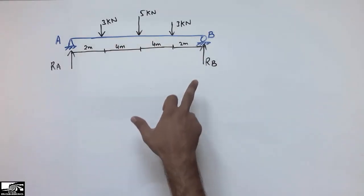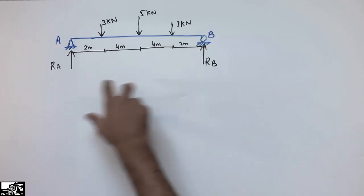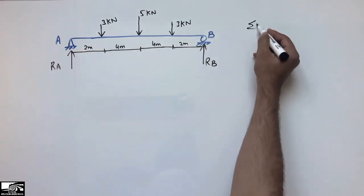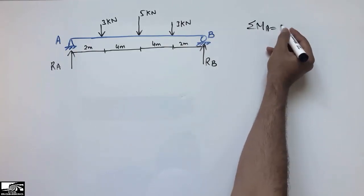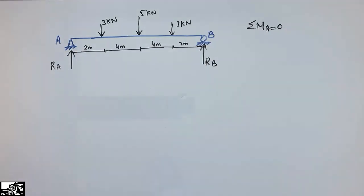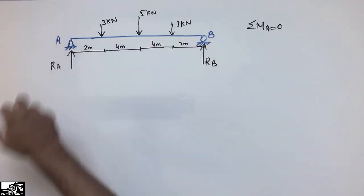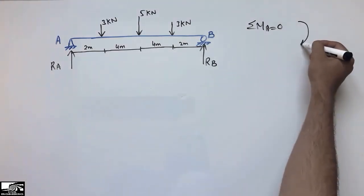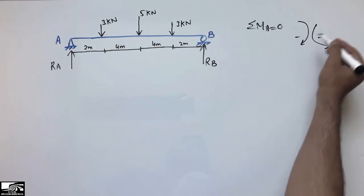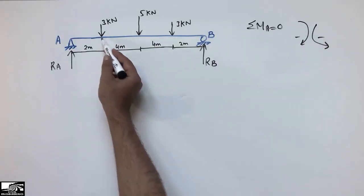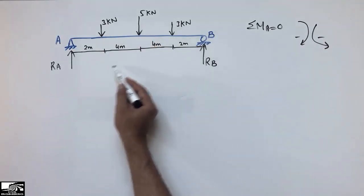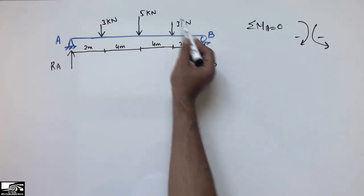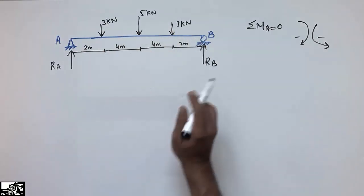First I have to find the support reactions. Let's consider the summation of moments at A is equal to 0. I am taking clockwise moment as positive and anti-clockwise as negative. The 3 kN, 5 kN, and 3 kN loads all create clockwise moments, while RB creates an anti-clockwise moment.